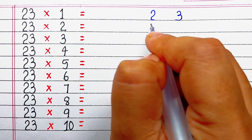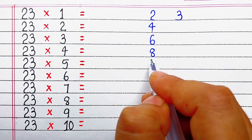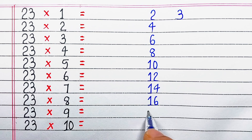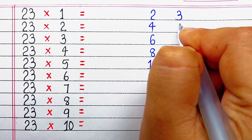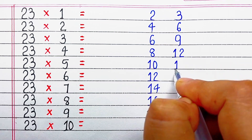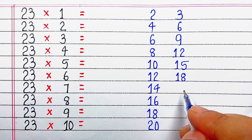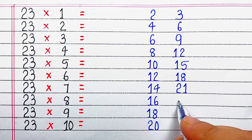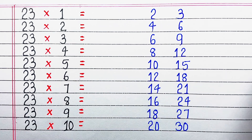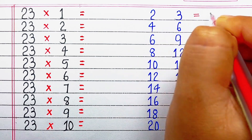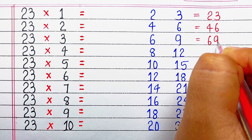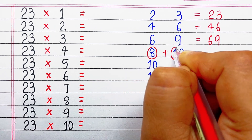To the left hand side we will write the table of 2 as we have done previously. Then to the right hand side we will write the table of 3: 3 ones are 3, 3 twos are 6, 3 threes are 9, 3 fours are 12, 3 fives are 15, 3 sixes are 18, 3 sevens are 21, 3 eights are 24, 3 nines are 27, 3 tens are 30. Now combining: 2 and 3 makes 23, 4 and 6 makes 46, 6 and 9 makes 69.